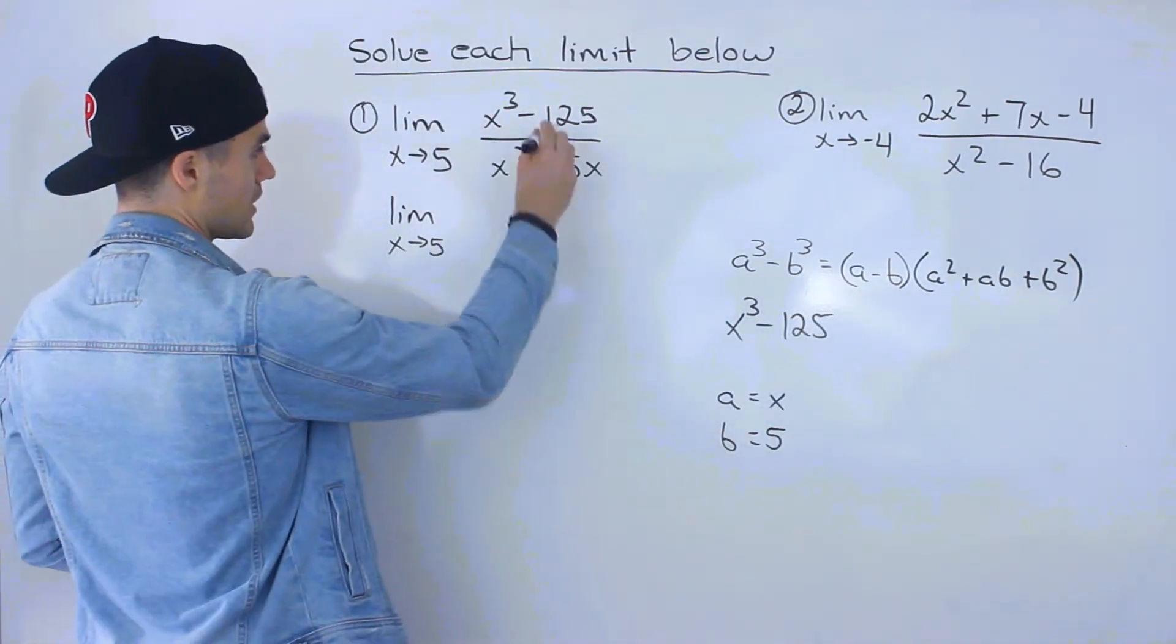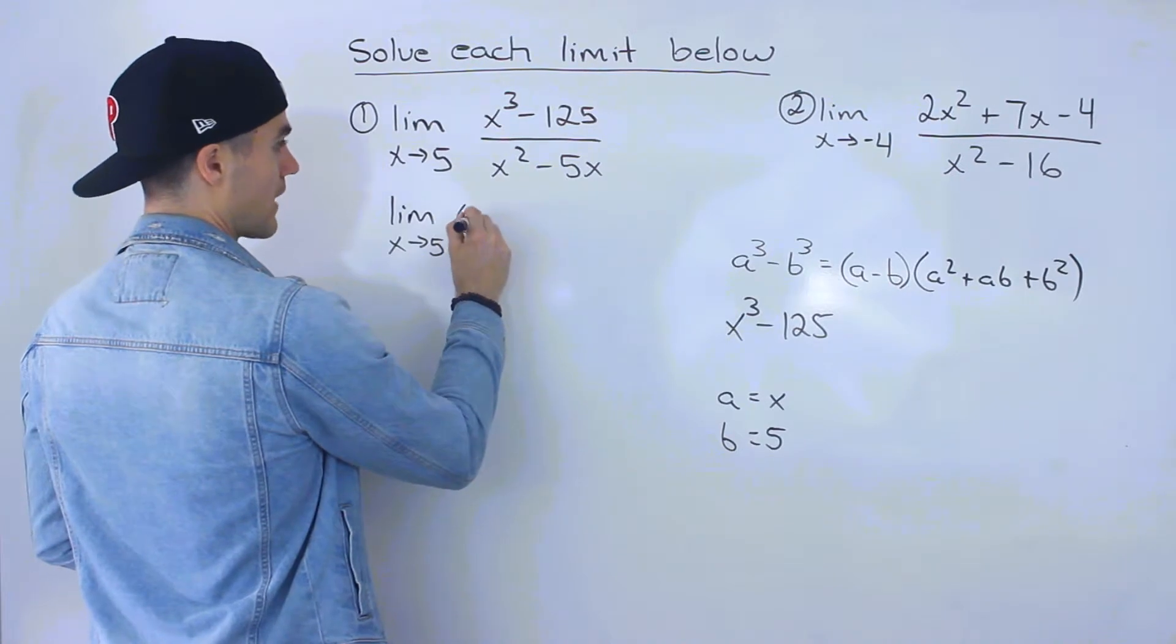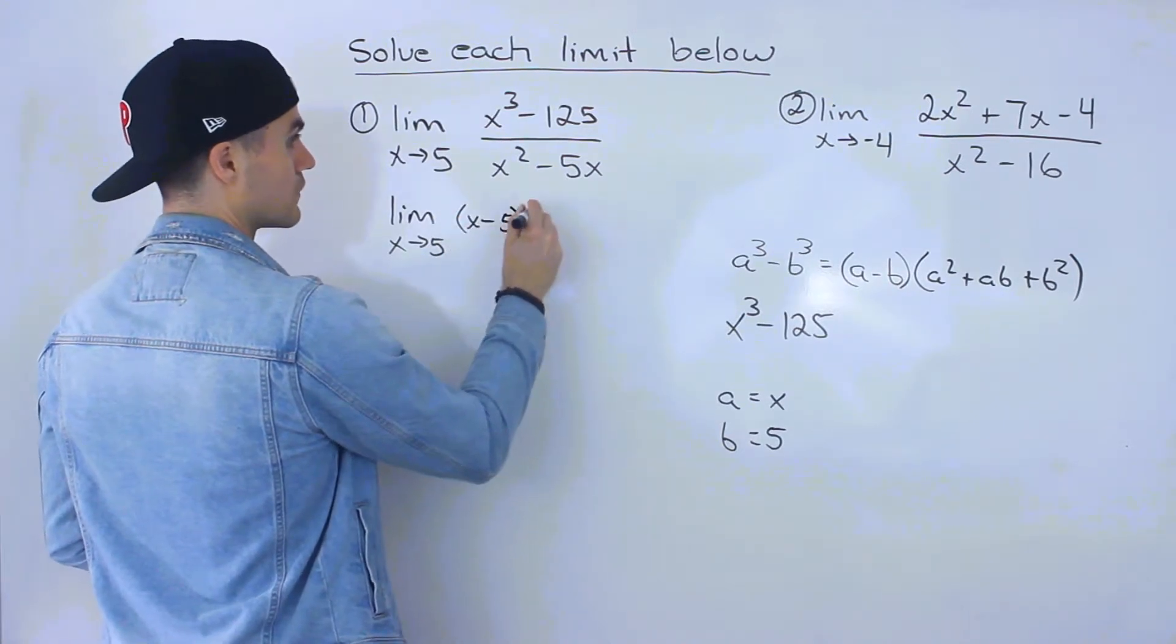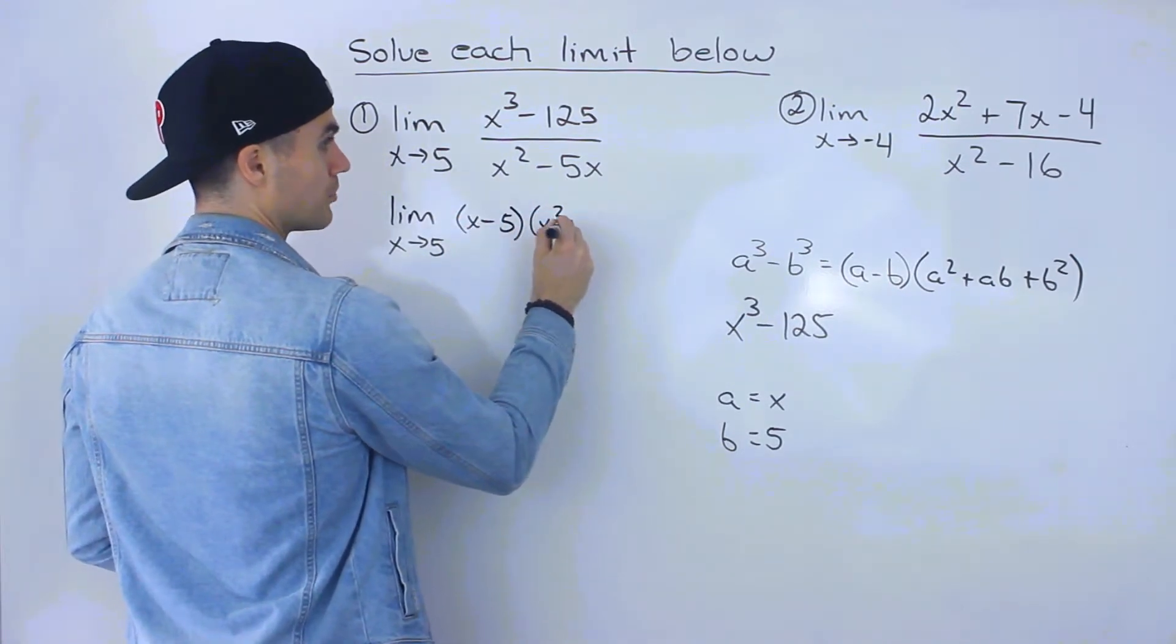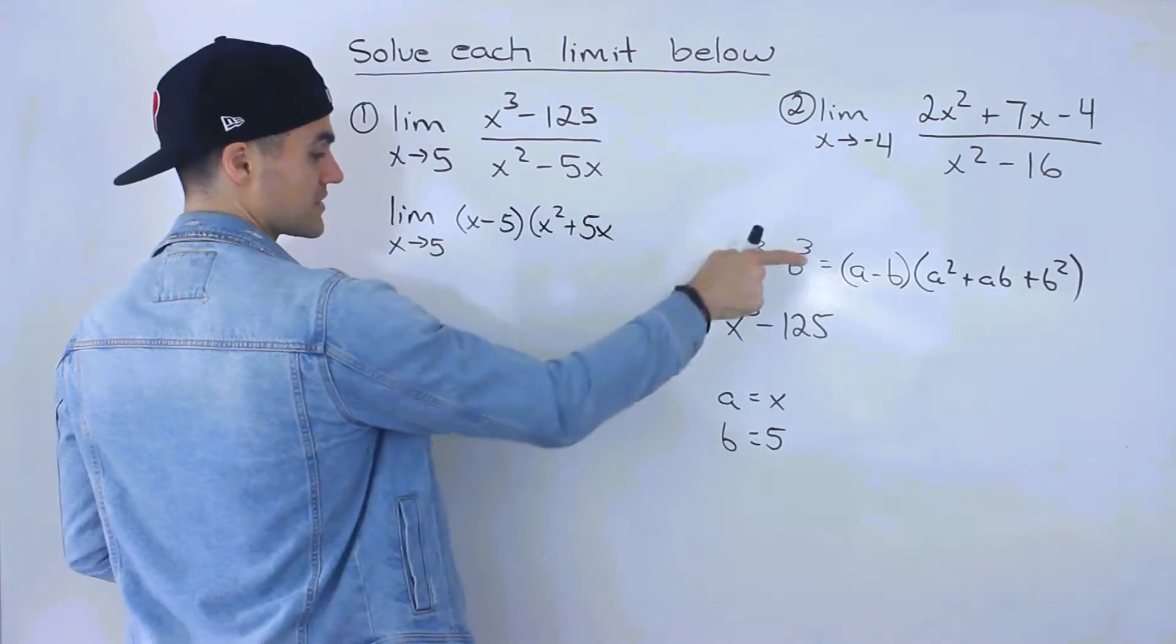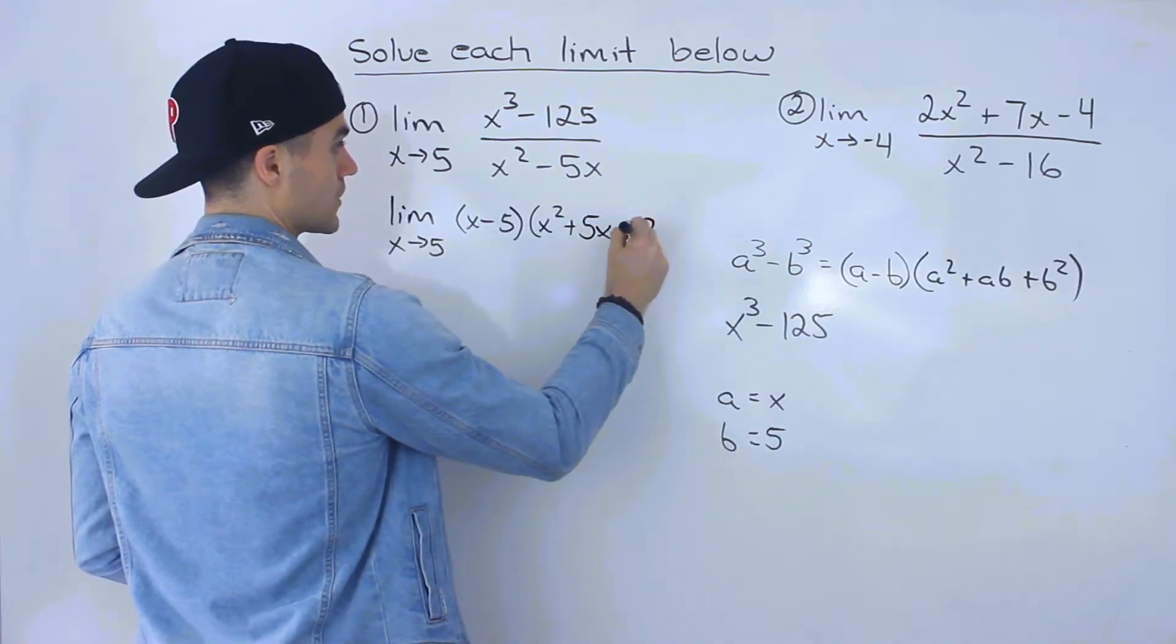So the numerator would factor into x minus 5. Then we'd have x squared plus a times b, so 5x, plus b squared, so 5 squared, which is 25.